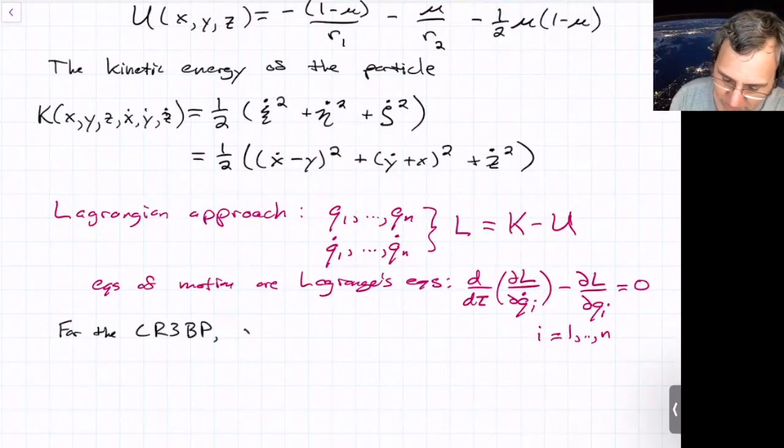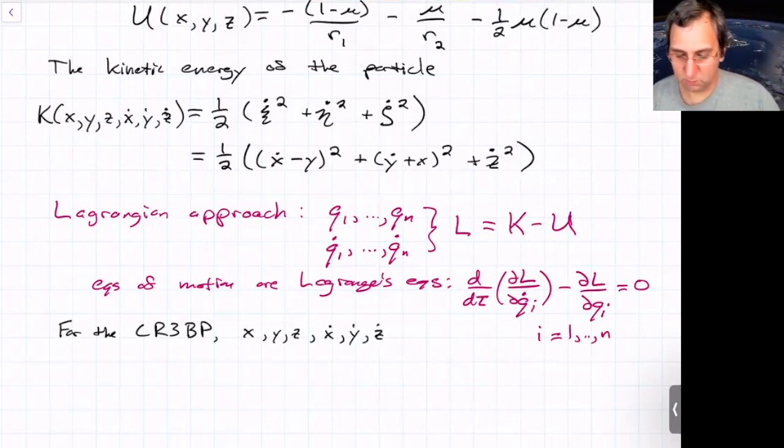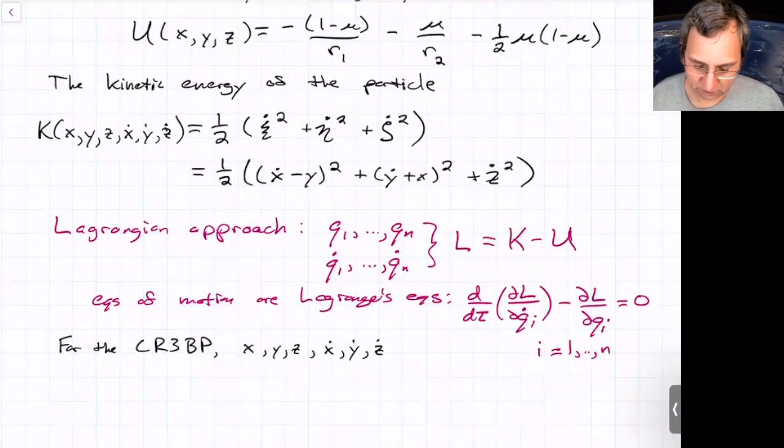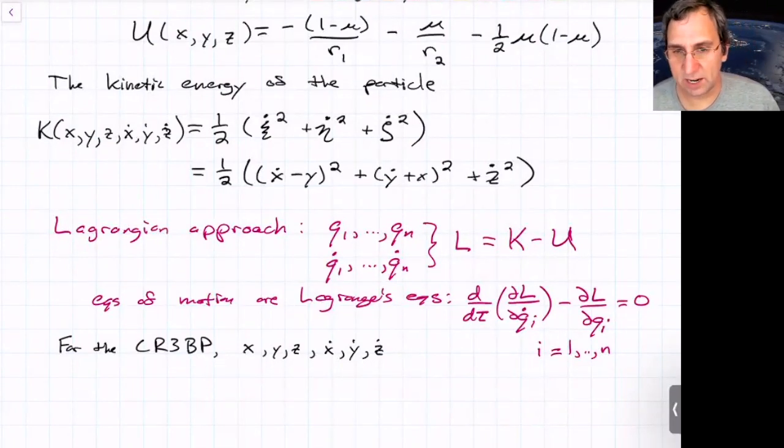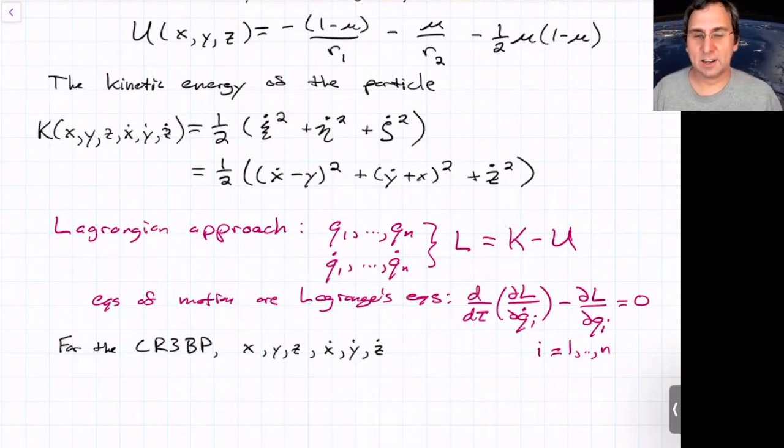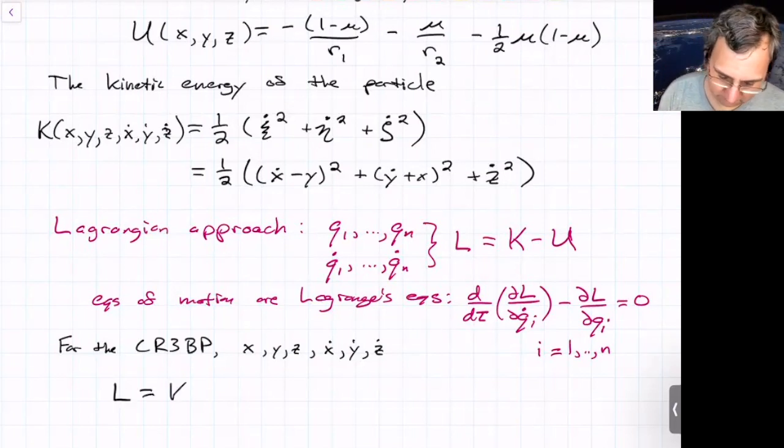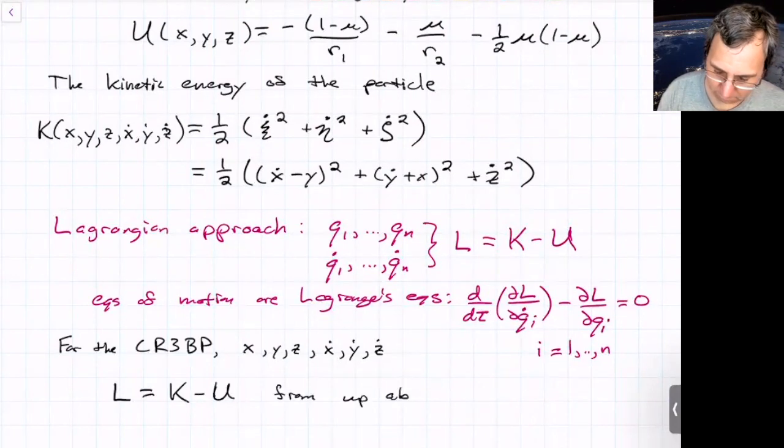For the problem we have at hand, so for the circular restricted three-body problem, our generalized coordinates are x, y, and z. And then their time rates have changed. I think these are sometimes called generalized velocities, x dot, y dot, z dot. And we've got the kinetic energy and the potential energy written in terms of the rotating frame. So the theory of Lagrangian says you can just write down the kinetic minus the potential energy, even if it's in a rotating frame, and you'll get the correct equations of motion. So it's very powerful. So if we were to write L, this is just k minus u from up above, we can write the Lagrangian equations of motion here.